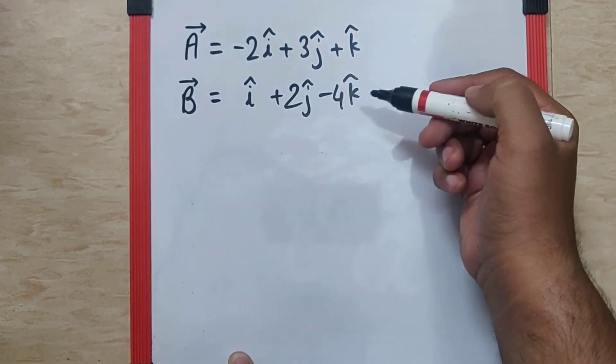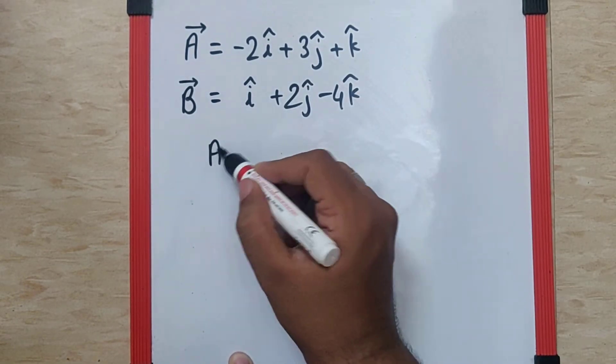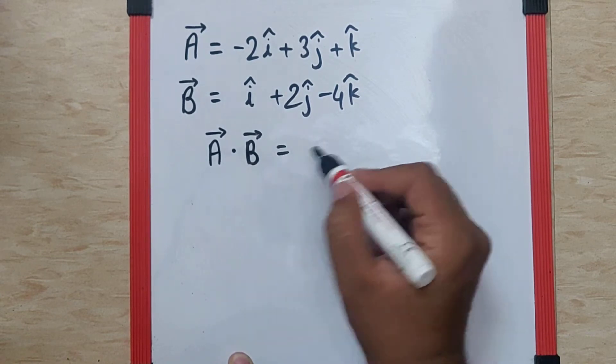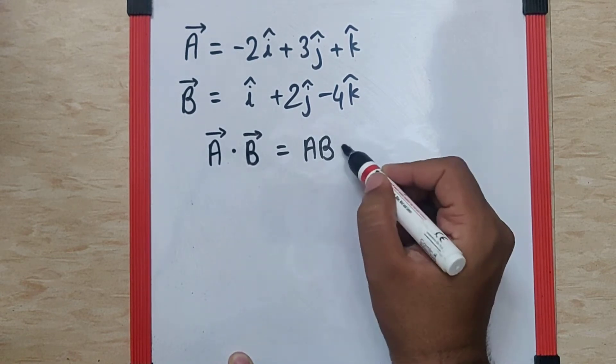Here, I cannot find anything common between them. So, the only way to go and find the value is to use this A bar dot B bar as AB cos theta.